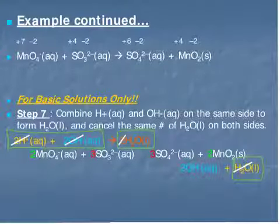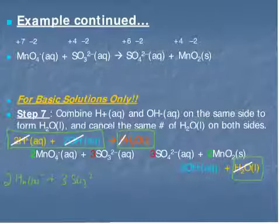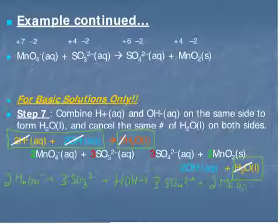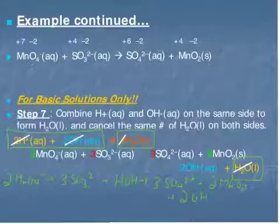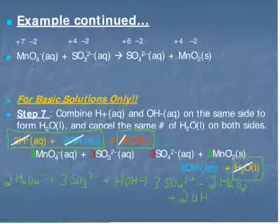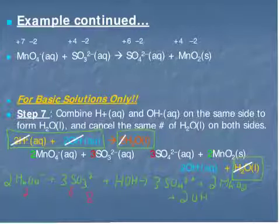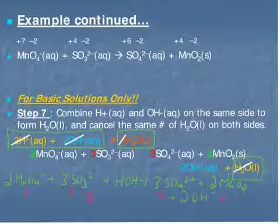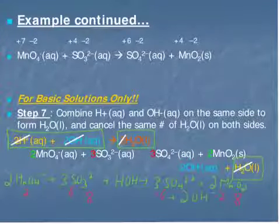Our final balanced equation is now written out. Counting atoms on both sides confirms they are equal. We also double-check charges: on the reactant side, the net charge is −2 plus −6 = −8 negatives. On the product side, 3×(−2) = −6 plus 2×(−1) = −2 gives a total of −8 as well — equal to our left-hand side.